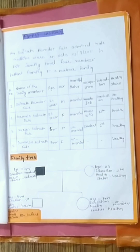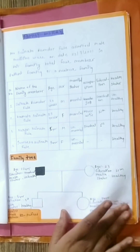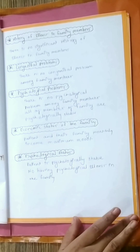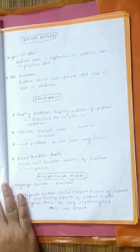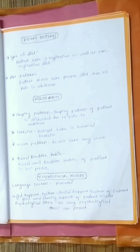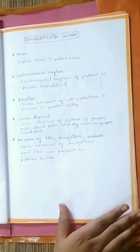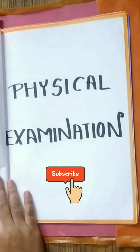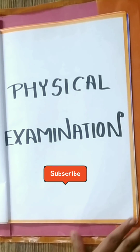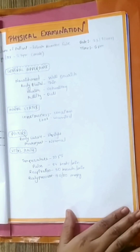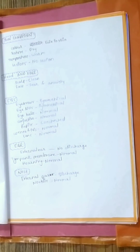Then family history — family treatment and history of illness in family members. The second point after this page is physical examination, in which you have to write all physical examinations that should be done on the patient.